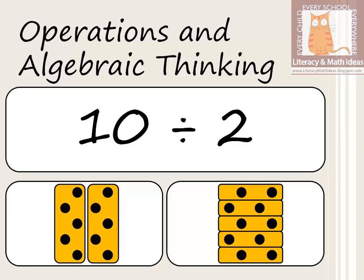The underlying thought process is important. The question you ask yourself comes down to the context of the problem you're trying to solve. For example, if you and a friend walk into a bakery and there are 10 donuts to split between you two, you'd calculate 10 divided by 2 using the first approach — because you want two groups and need to know how many donuts are in each group.